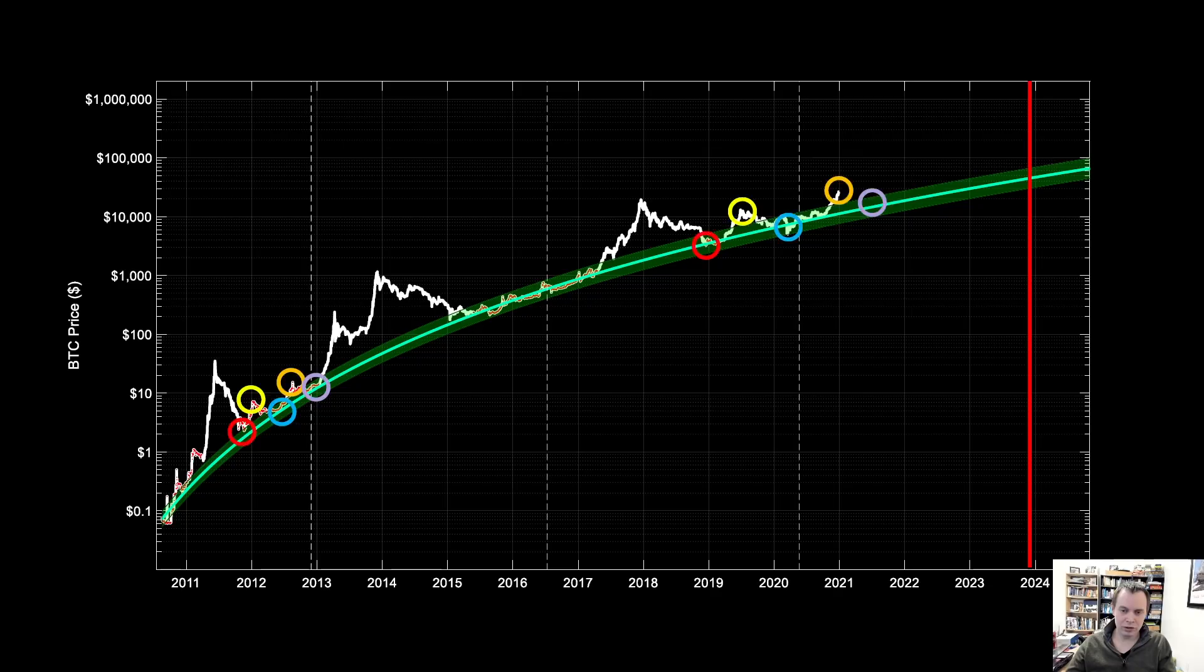Now some of you may be wondering, well, this is very dubious of course because it's only three data points, and I would agree with you, right? It's only three data points. And as an exercise, I shifted just to see where it would put it. If the third peak had taken place in June of 2017 rather than December of 2017, then it would predict the next peak to be in May of 2022.